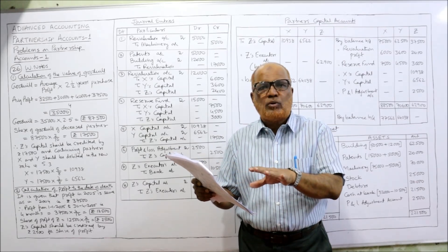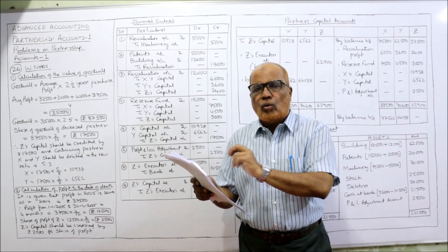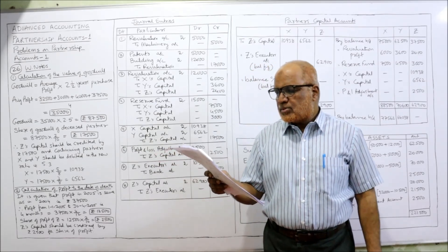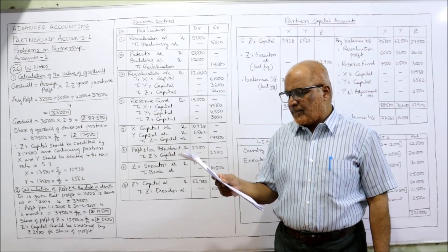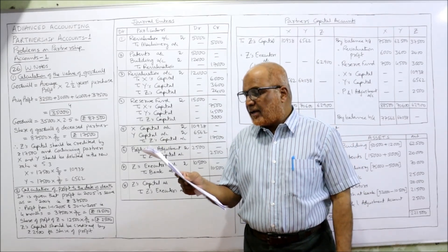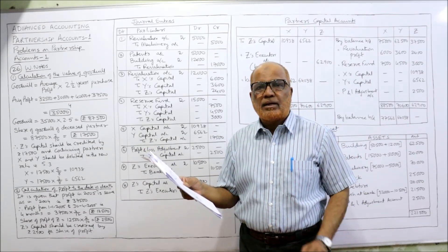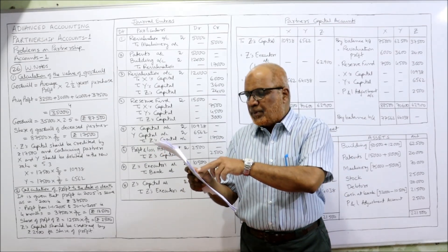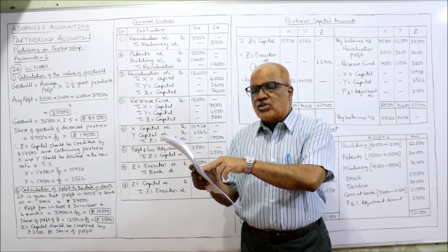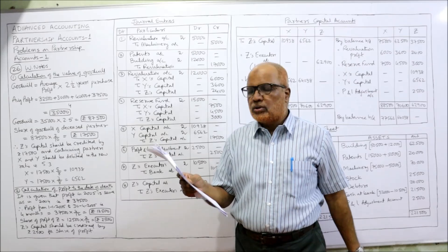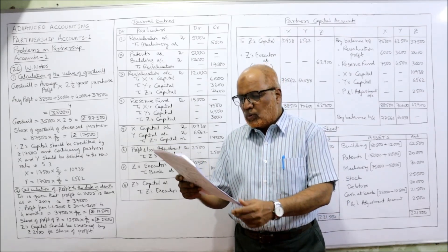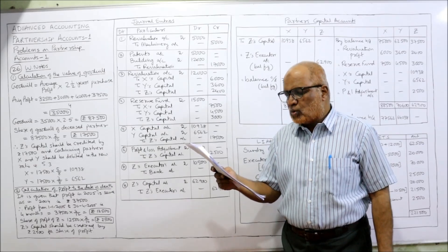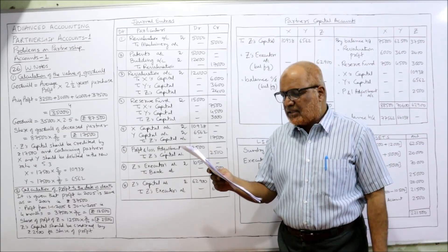The reserve fund is 15,000 and this will be distributed among all partners in the old ratio of 5:3:2. Assets include building, patents, machinery, stock, debtors, and bank balance. Note: the bank balance is misprinted as 32,500 — make it 32,000. Total is 2,17,500.